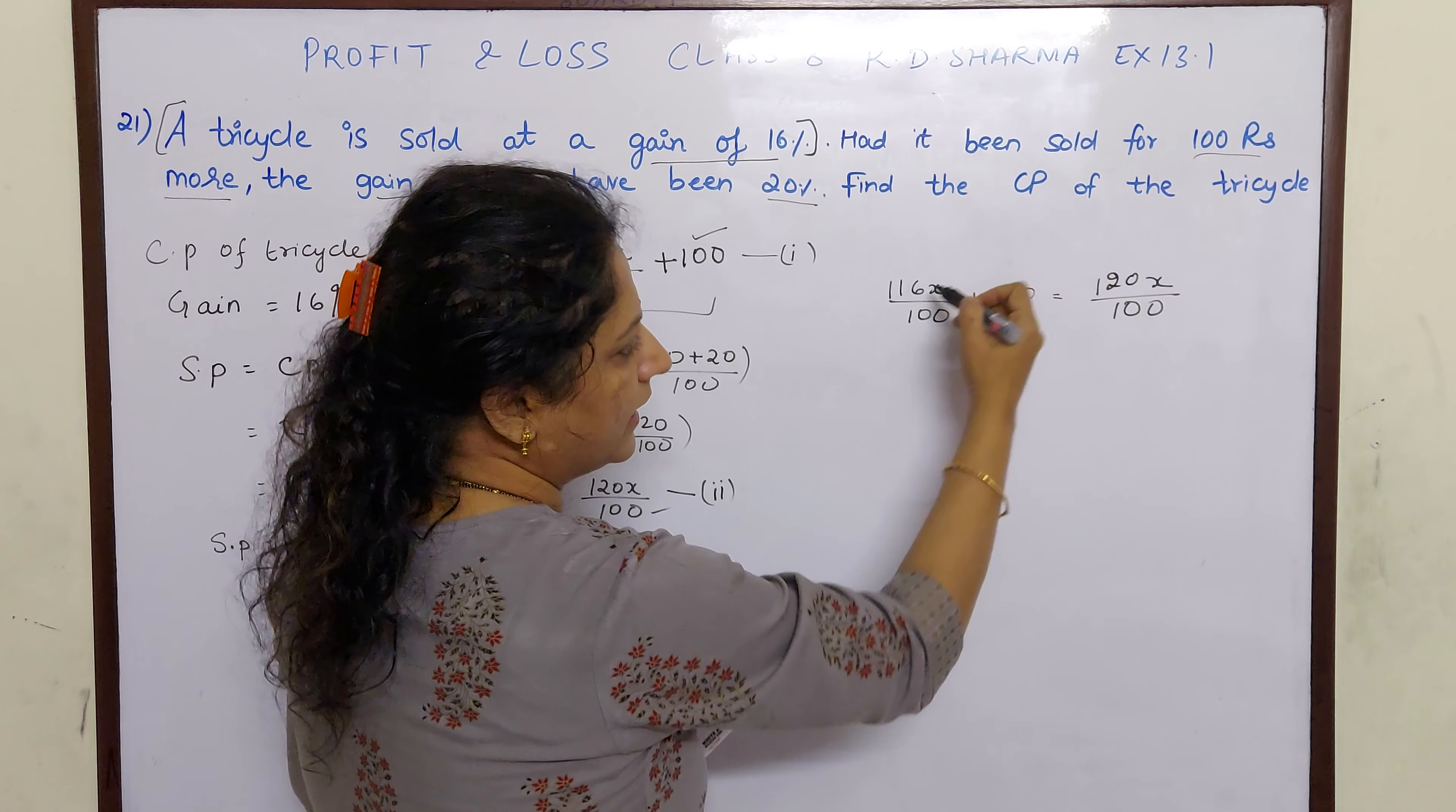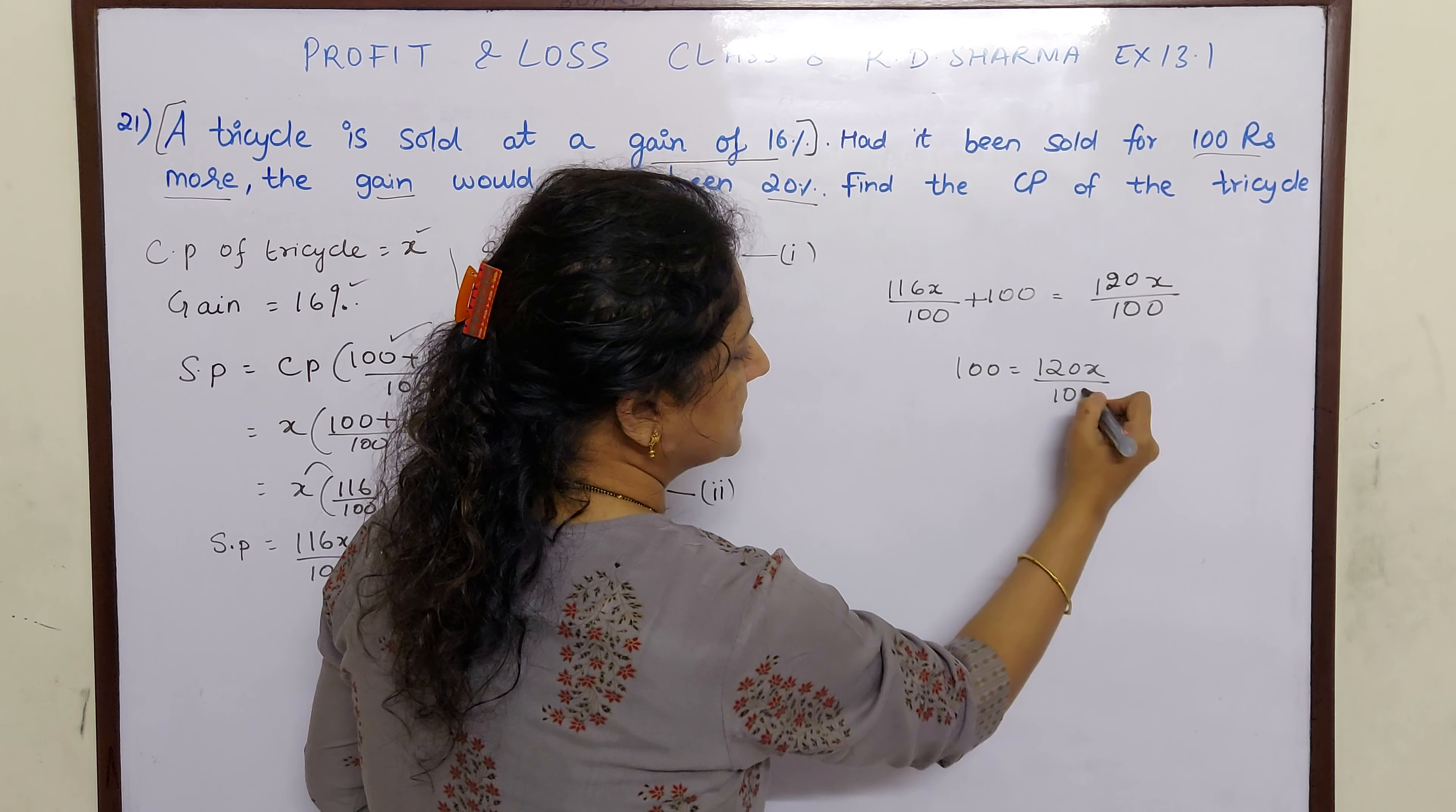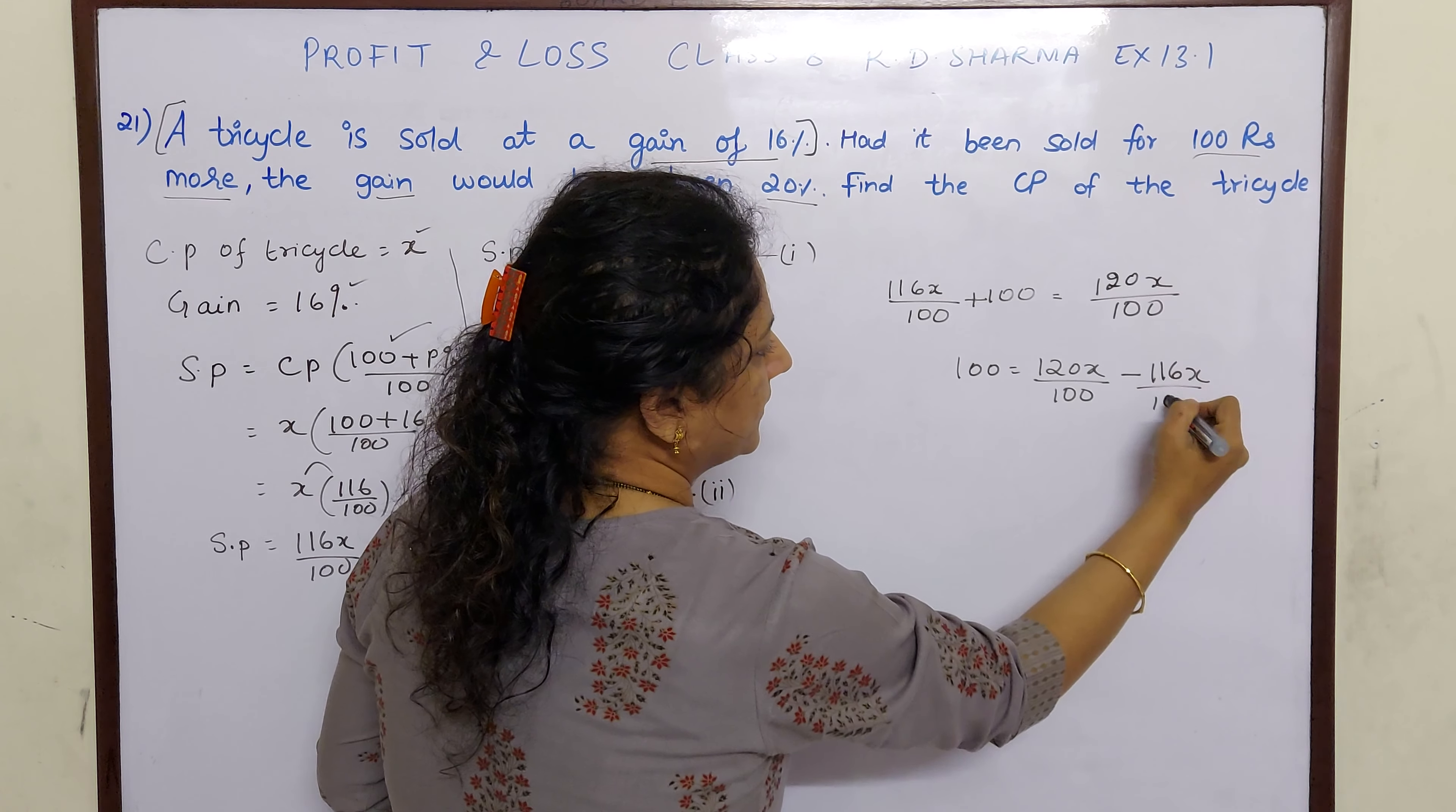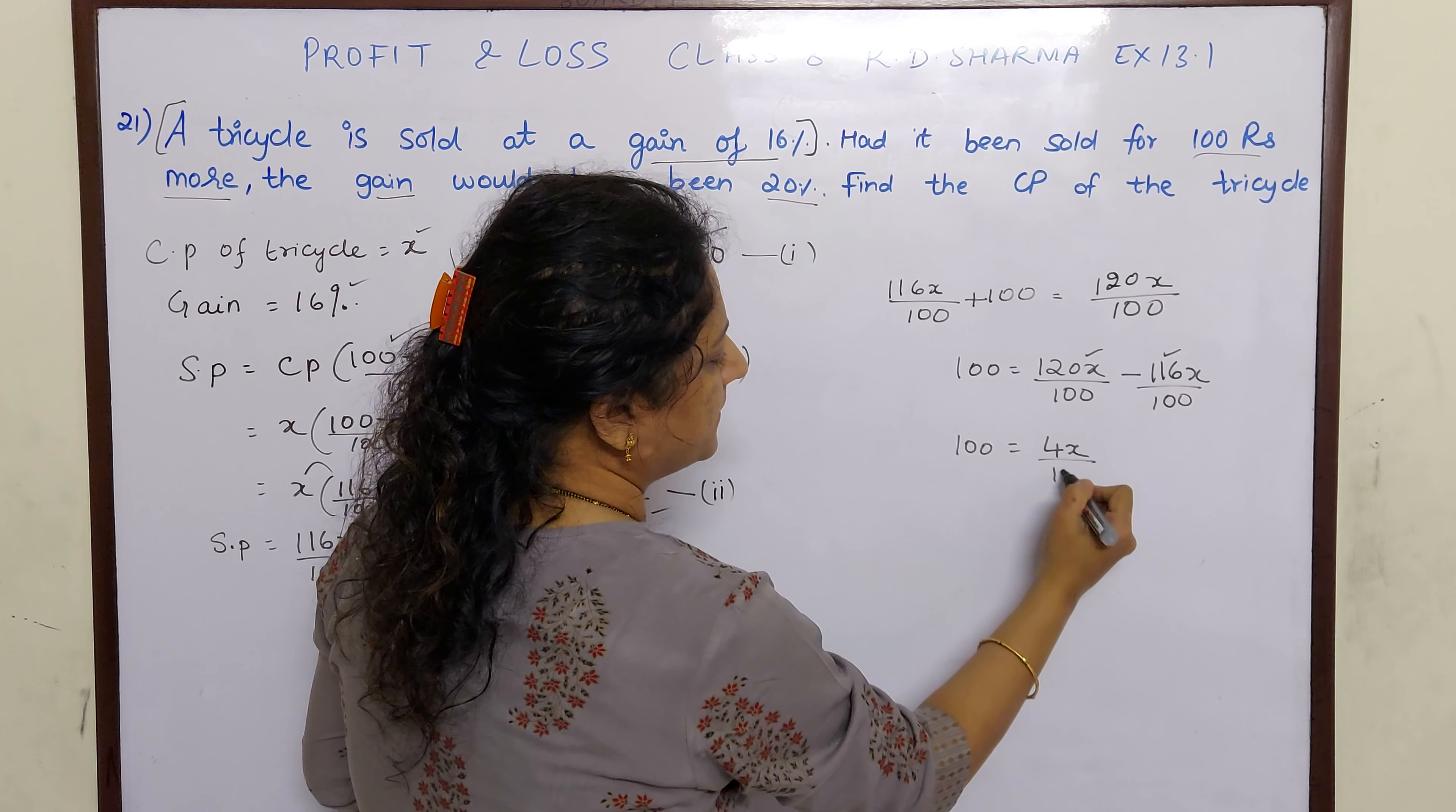So let me bring 116X by 100 there because they are like terms. So 120X by 100 will remain as it is. When I take this here, it becomes minus 116X by 100. So 100 is equal to 120X minus 116X is 4X by 100.